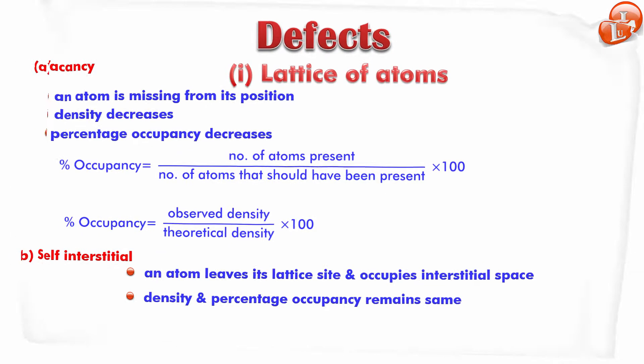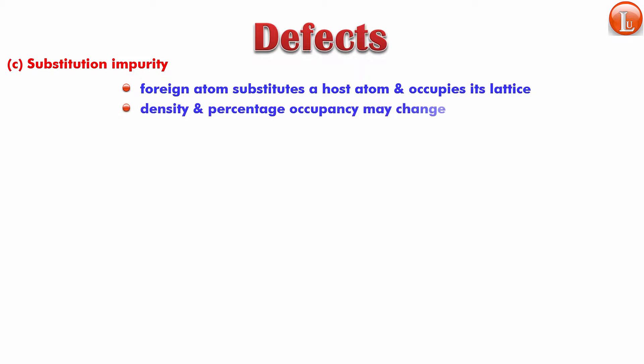Another possibility is substitutional impurity. Again the name tells you everything. Wherever an atom is supposed to be, instead of that atom a foreign atom is present. So a foreign atom substitutes a host atom and occupies its lattice. Now the percentage occupancy and the density would definitely change unless the foreign atom or molecule has the same molecular mass or atomic mass as the atom that leaves it.